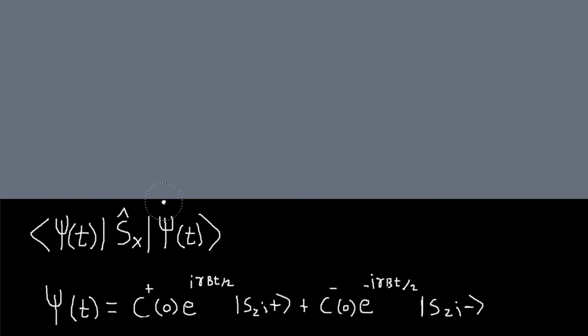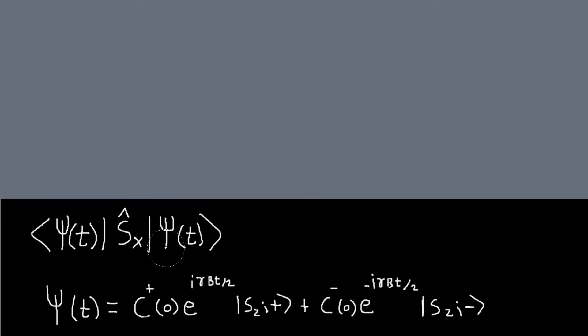Okay, so now we want to compute the expectation value of Sx and Sy in our state, our solution that we found a couple of videos ago. So here's our solution expanded in terms of my Sz kets, and to compute this I need to expand my operator in terms of my Sz outer products. We don't have an expression for that yet, but we can get one very easily.